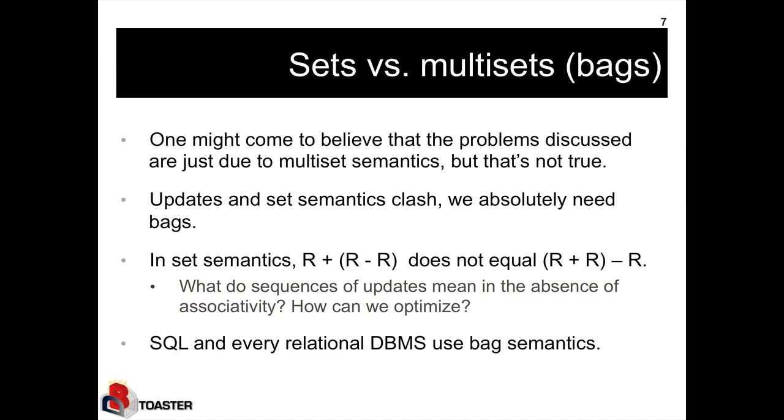The alternative would be to apply these two updates, the insertion of R and the deletion of R, one at a time to the database, which is R. That means I would add R to R, which in set semantics is a no operation, then I would subtract R, which would give me the empty result. So in one case I would have R, in the other case I would have the empty relation.